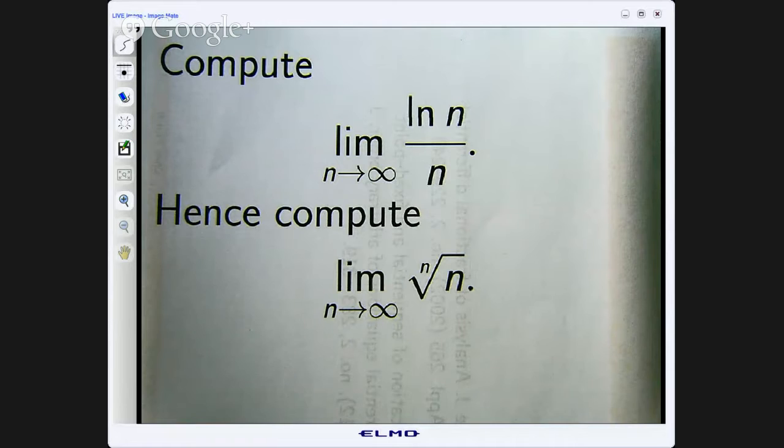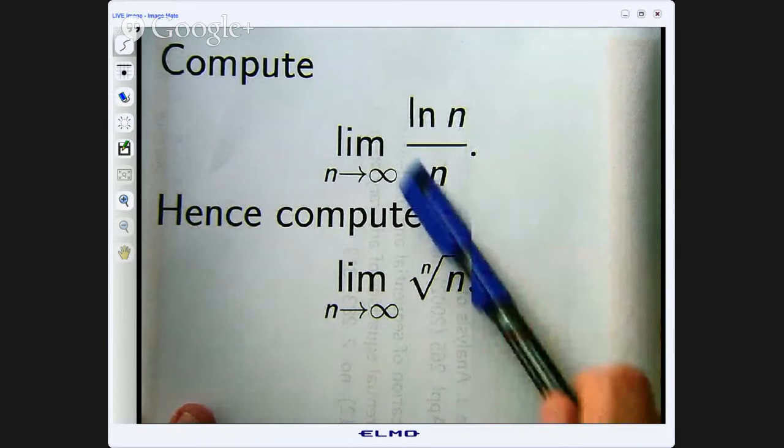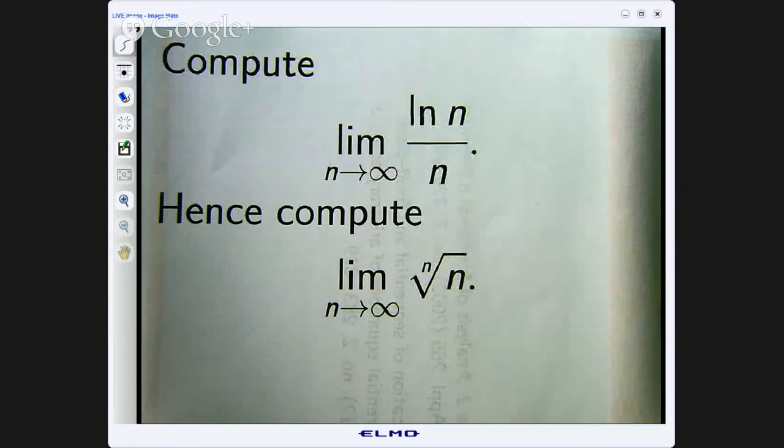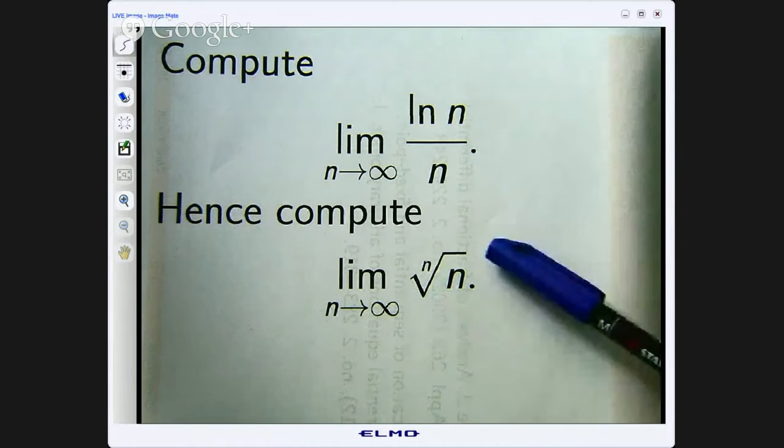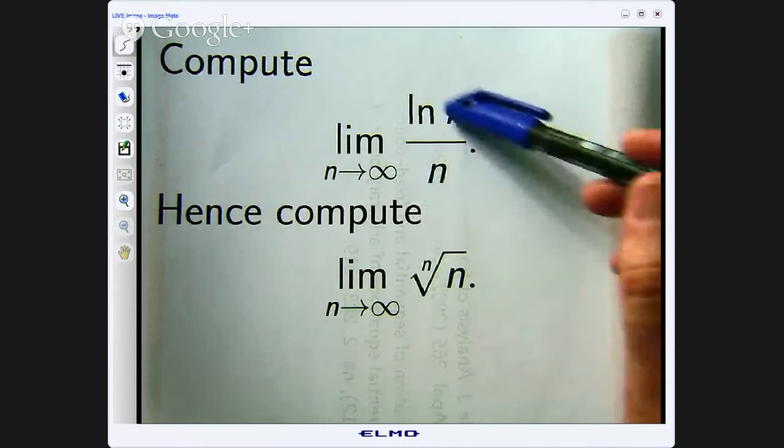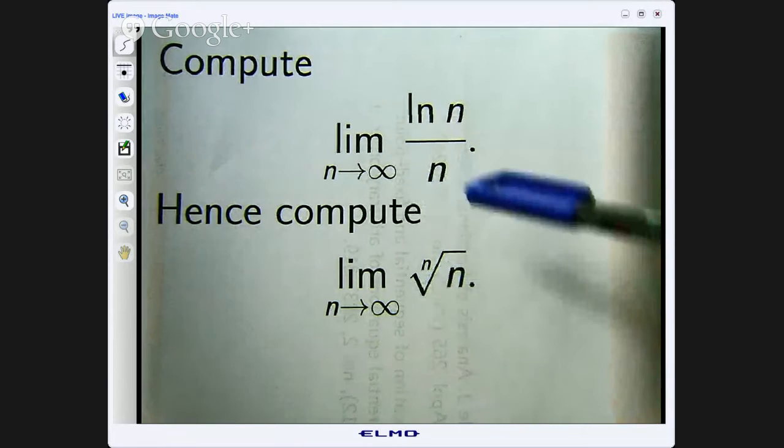Now these kinds of functions here that have the domain as the set of natural numbers are called sequences and they are really important in all sorts of modeling where the phenomena is changing in discrete time, or sequences can be used for approximating solutions to problems in an iterative process. But the idea of this video is to compute this limit and then use that to compute this limit.